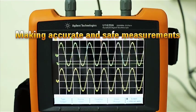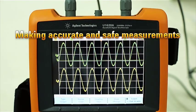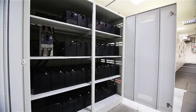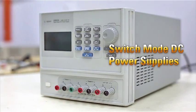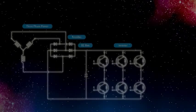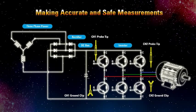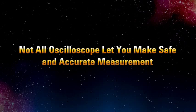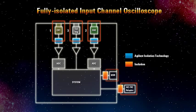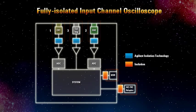Making accurate and safe measurements in power control circuits such as motor controllers, uninterruptible power supplies, and switching DC power supplies can be challenging when the signal reference is floating rather than referenced to earth-ground potential. Under these conditions, not all oscilloscopes let you make accurate and safe measurements unless it is a fully isolated input channel oscilloscope.